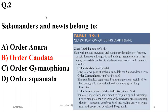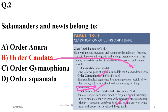The other two orders in class Amphibia include Gymnophiona and Anura. In Gymnophiona they include caecilians, and Anura includes frogs and toads. So the order Caudata is where salamanders and newts belong.